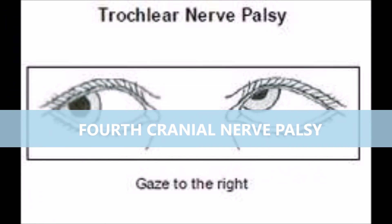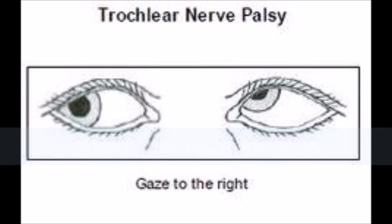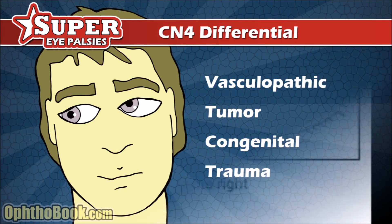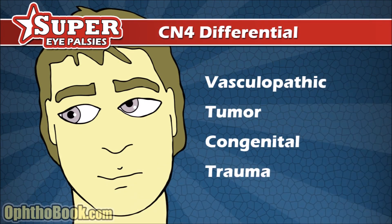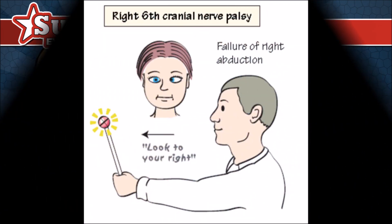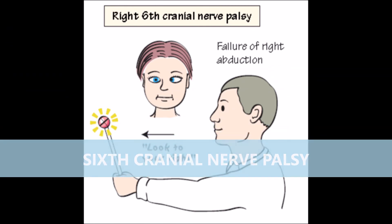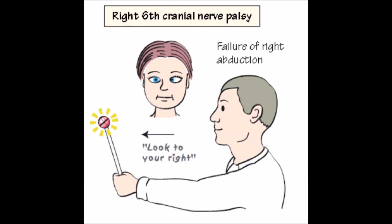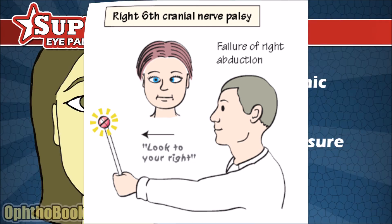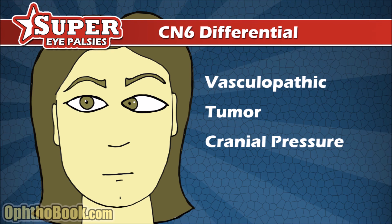Fourth cranial nerve palsy causes vertical diplopia exacerbated when looking downwards and inwards, such as when reading or walking down the stairs. It is caused by microvascular damage from diabetes mellitus or hypertensive disease. Sixth cranial nerve palsy affects the lateral rectus muscle, impairing eye abduction. The eye may be slightly adducted when the patient looks straight ahead. The palsy may be secondary to nerve infarction, trauma, infection, or increased intracranial pressure.